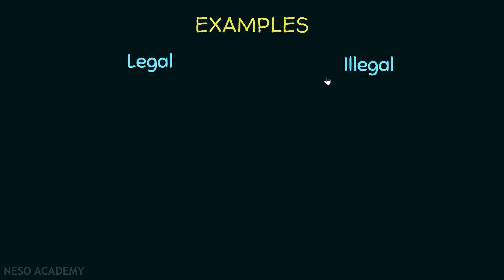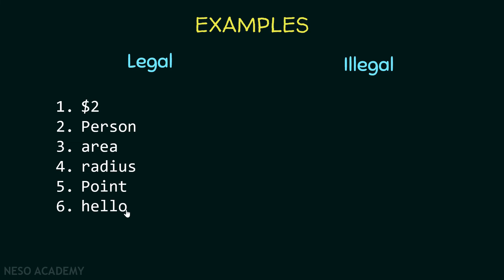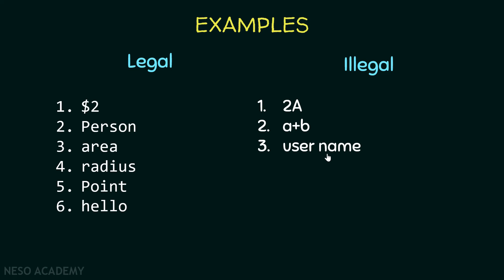Now let's see more examples of legal and illegal identifiers. This identifier is legal because it starts with a dollar sign and contains digits. This one is also legal — it starts with a letter and has no spaces or weird characters, and all these identifiers are also legal. For illegal ones: this is not legal because it starts with a digit; this one contains a plus sign; this one has a space so Java will treat it as two separate words. These identifiers are also not legal because they are reserved keywords in Java.